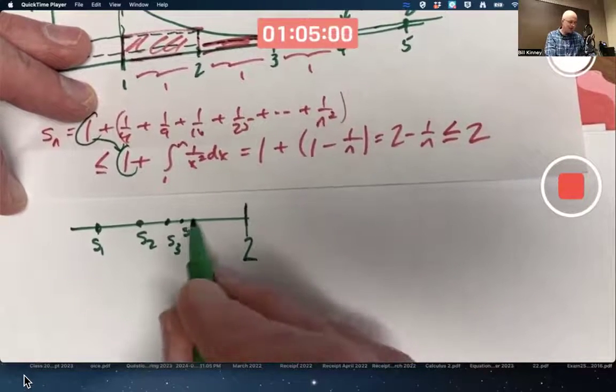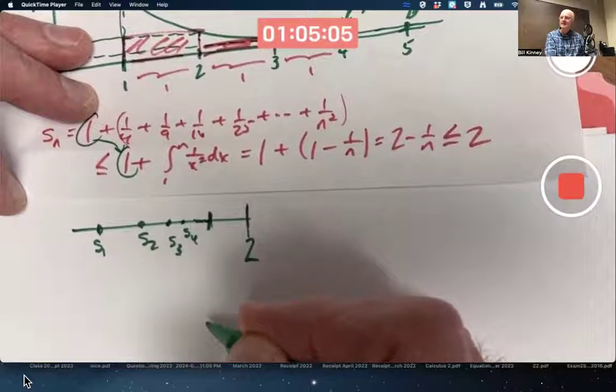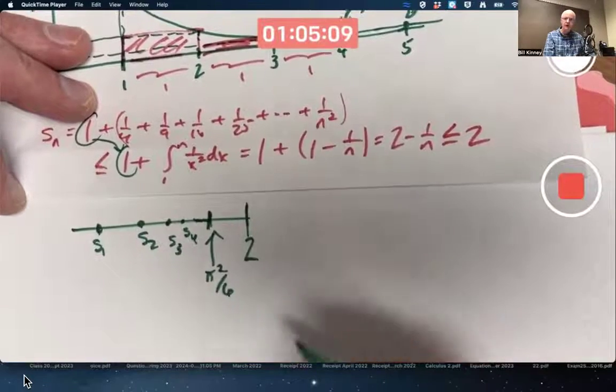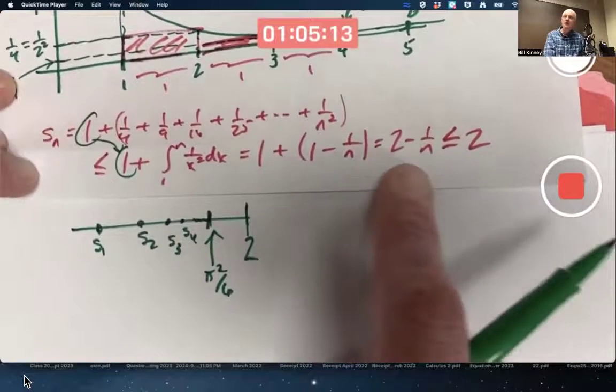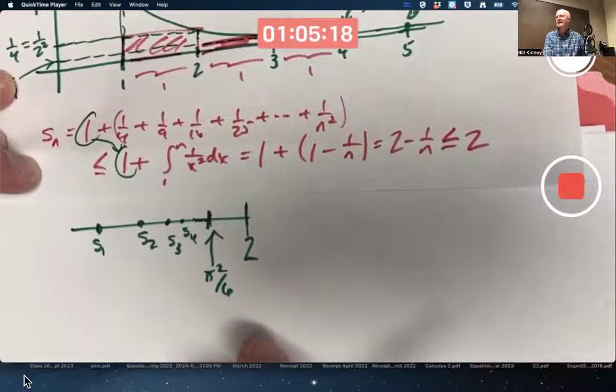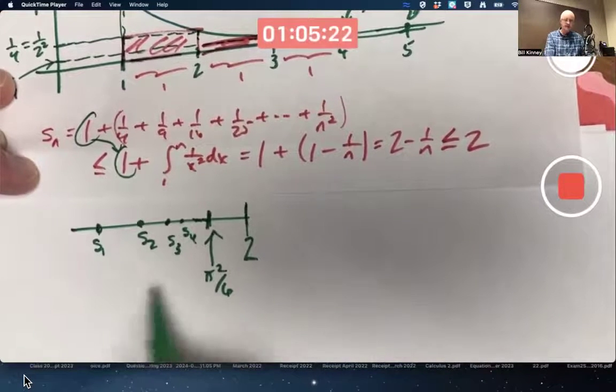They have to gang up, so to speak, on some number here less than 2. And that number does happen to be pi squared over 6. But you never know that just looking at this what I did here. But you do know this convergence because of it always being less than or equal to 2. Technically, what I'm using is something called the completeness of the real numbers there. I'm not going into details. It should make some intuitive sense.